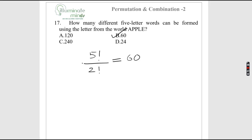How many words can be formed using the letters of the word APPLE? There are 5 characters with P repeated twice, so the answer is 5!/2! = 60.